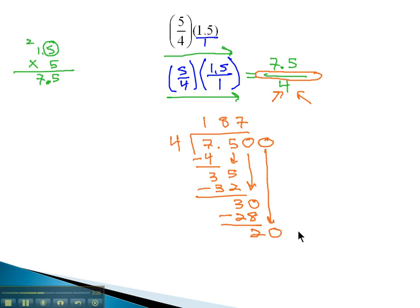4 goes into 20 five times, because 4 times 5 is 20. And we finally subtract to 0. Bring the decimal straight up into our answer. And we have our final answer, 1.875 or 1 and 875 thousandths.